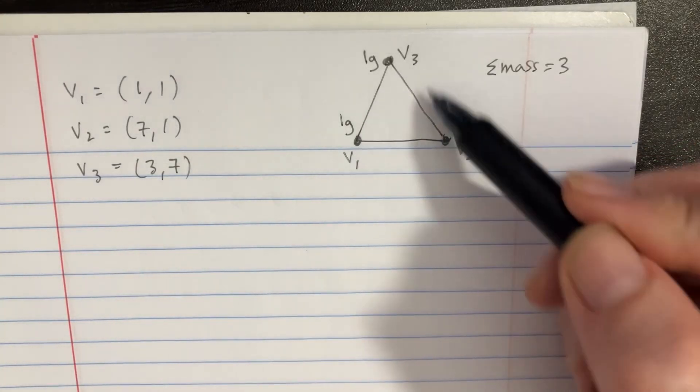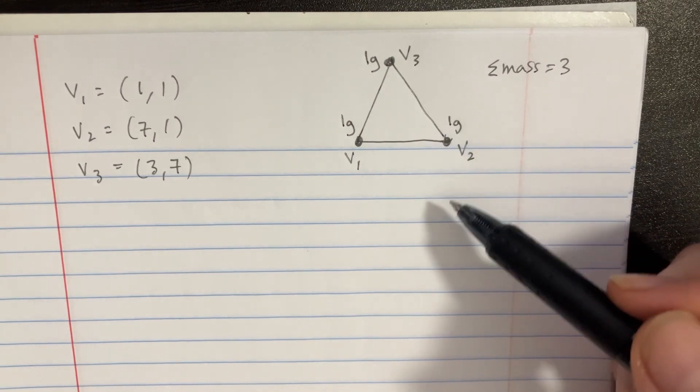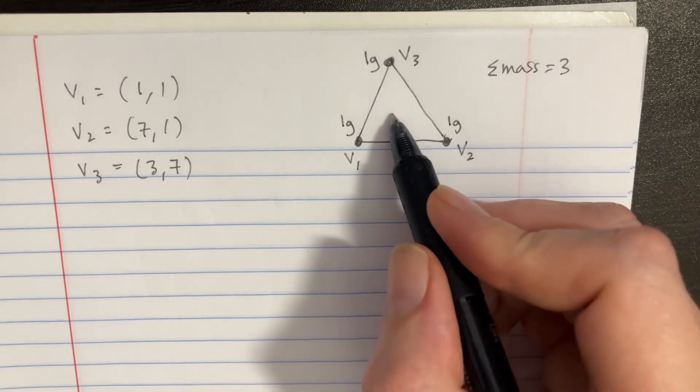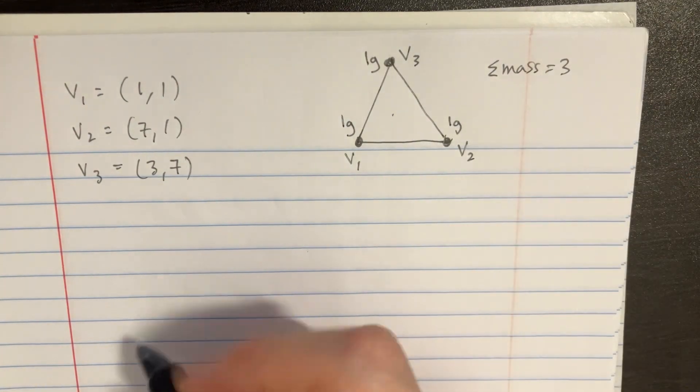We have a triangle, and there's a gram placed at each one of these vertices. So we're asked to figure out what the center of mass of this whole thing is. And we know the mass is 3 here.